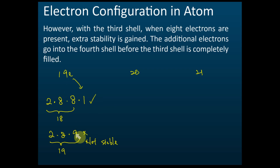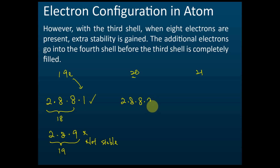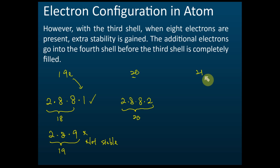Even though the third shell can hold up to 18 electrons, the arrangement 2, 8, 8 is already very stable. So for 20 electrons, you fill two in the first shell, eight in the second, eight in the third — making it very stable — and the extra two electrons go to the next shell, giving 2, 8, 8, 2. For our syllabus, you only need to know the electron arrangements for the first 20 elements.